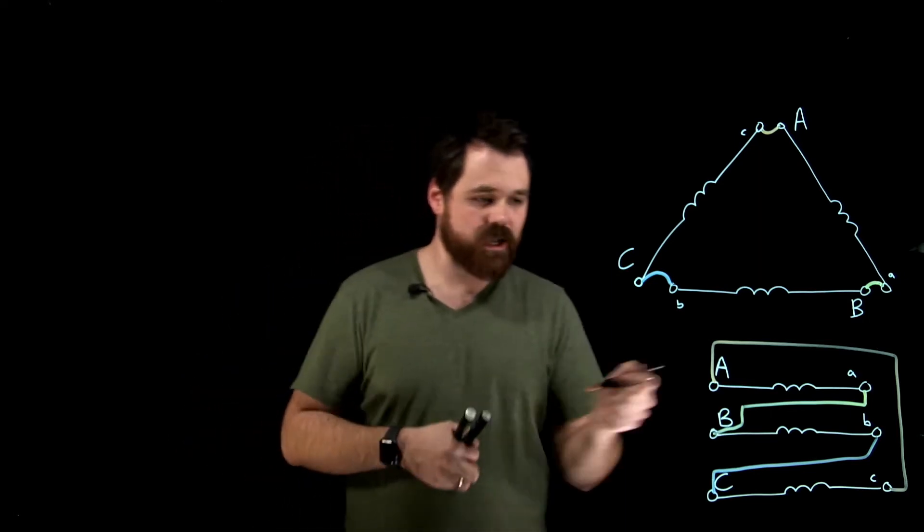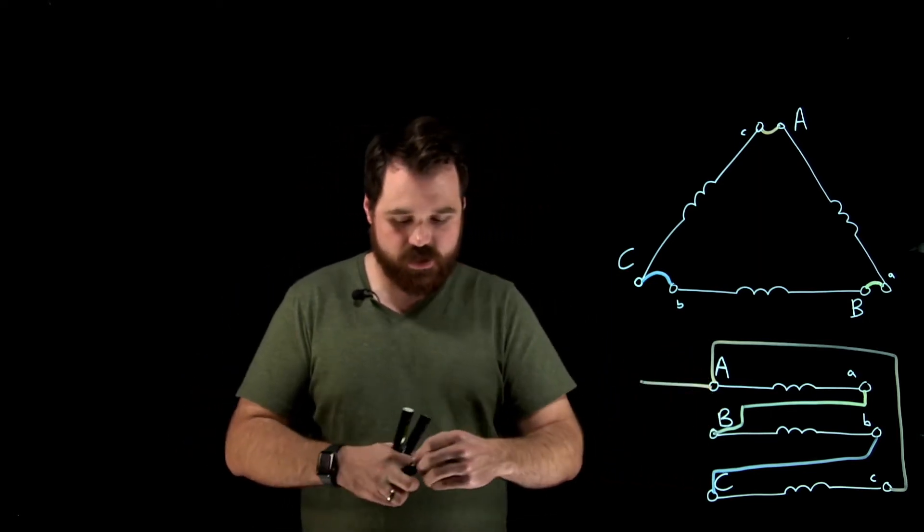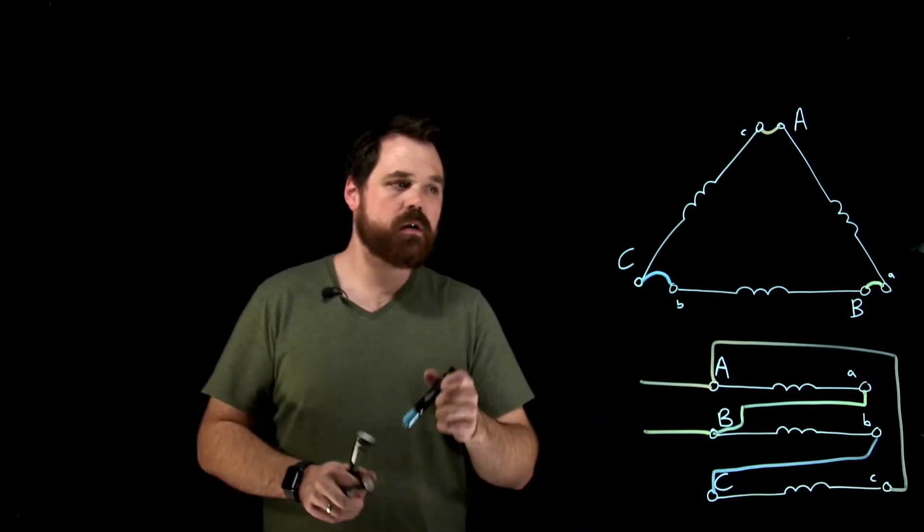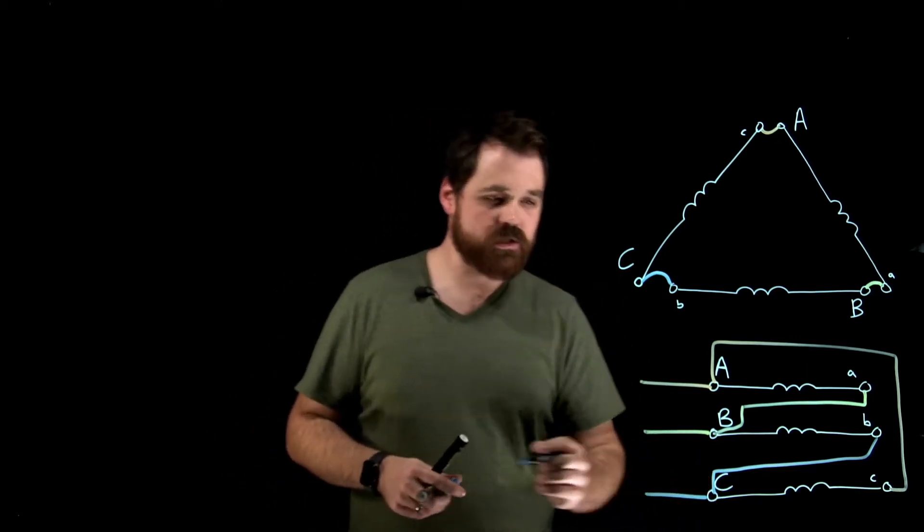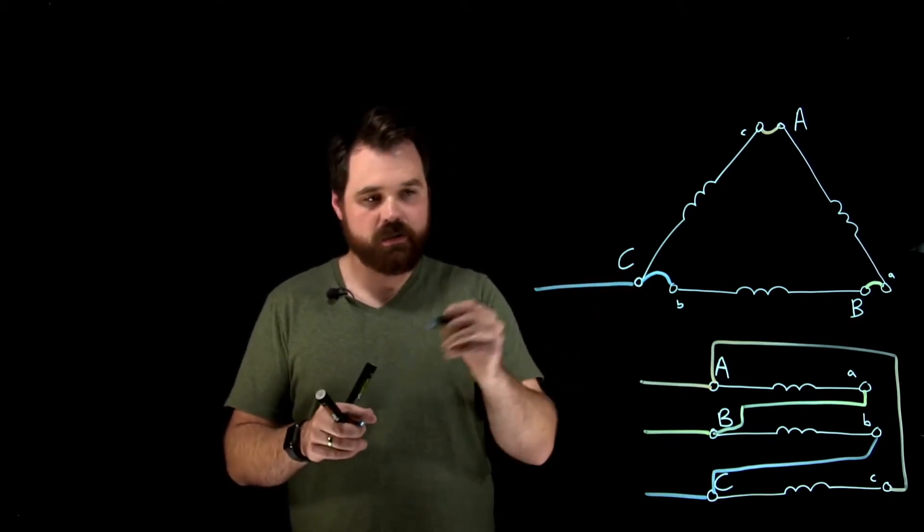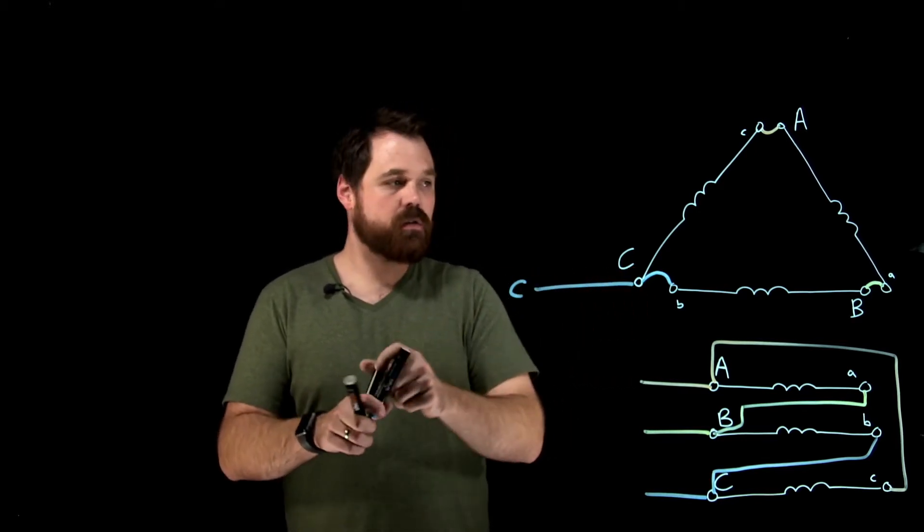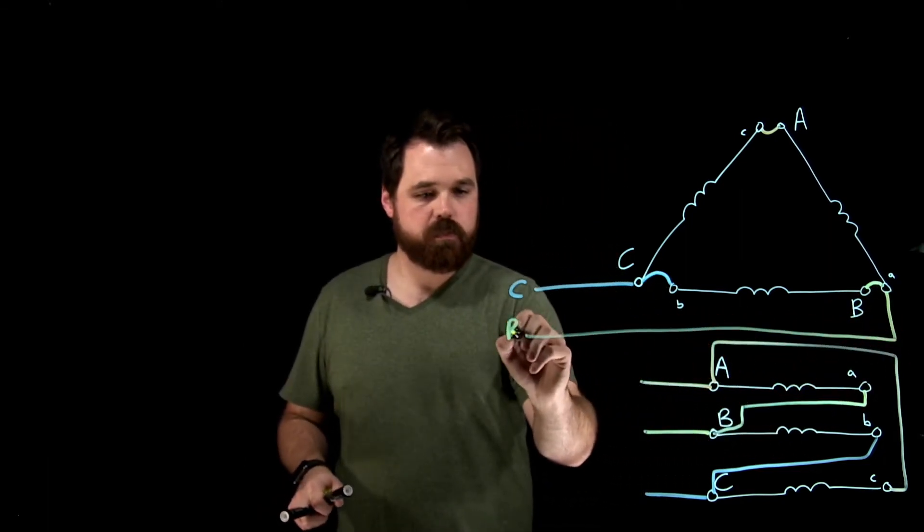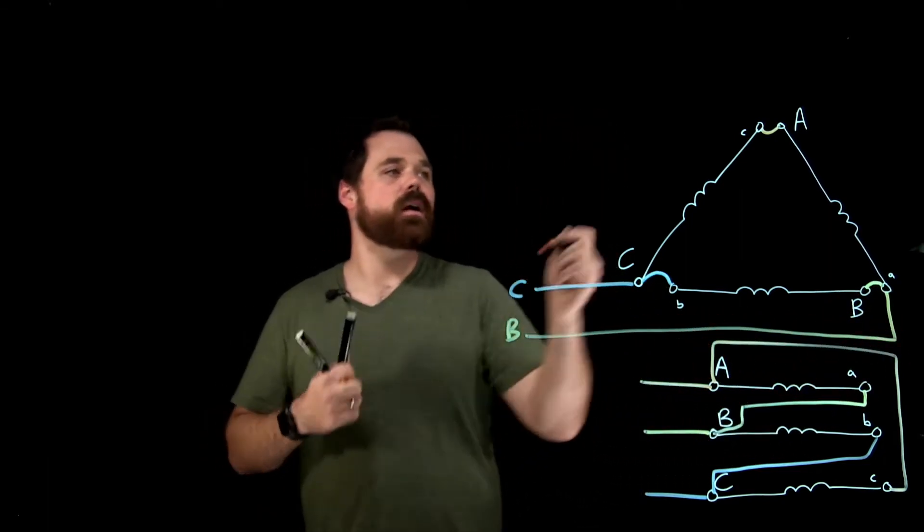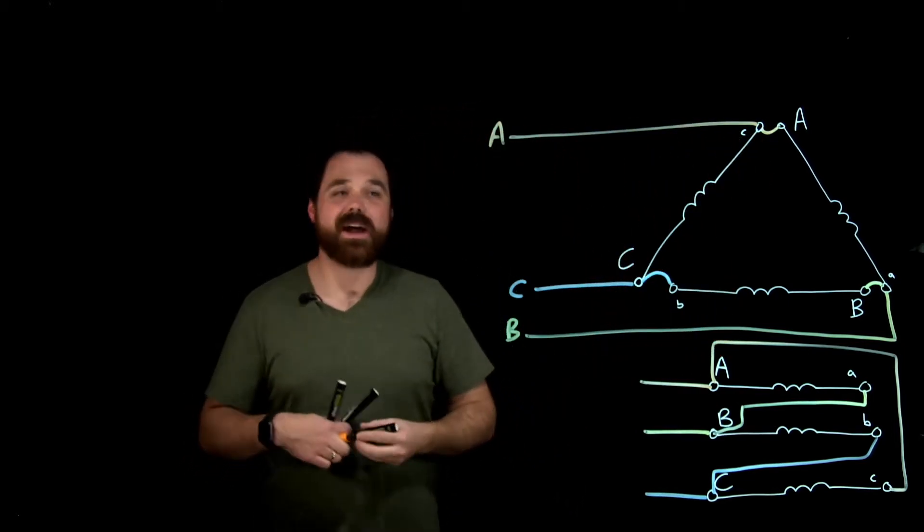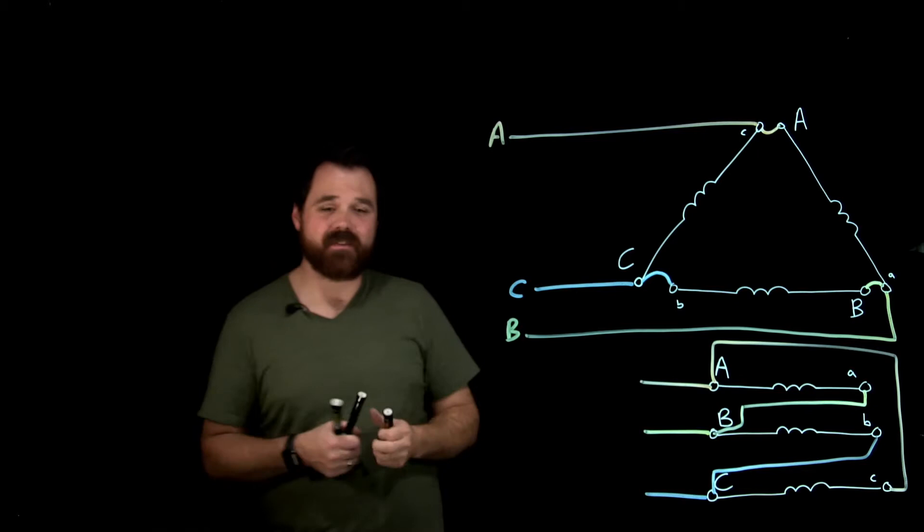What that gives us, then we take our three-line conductors over, A, B, and C, which is exactly what we have from here. C, over here we connect up B and A. So just like that, that's how we get that delta configuration.